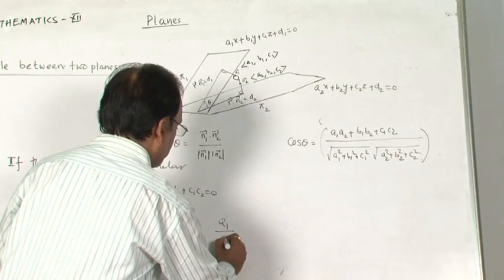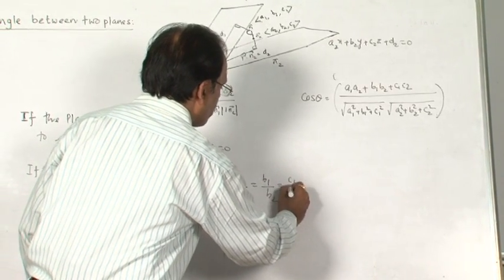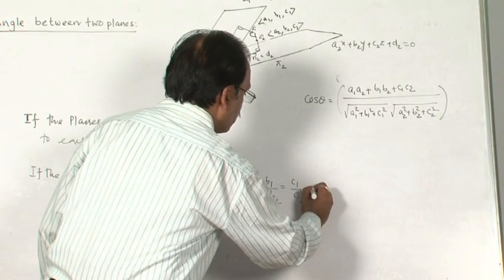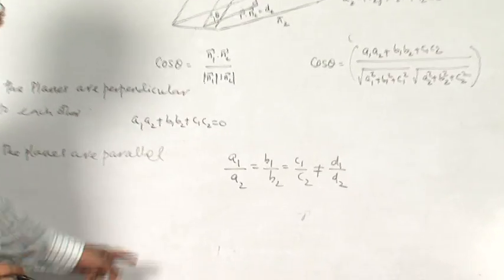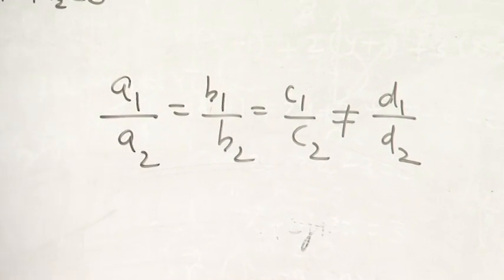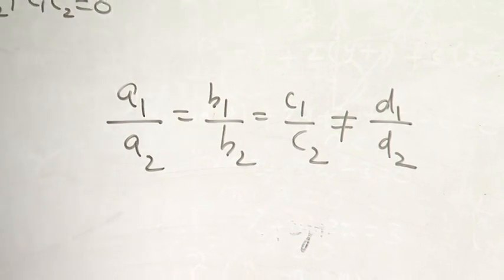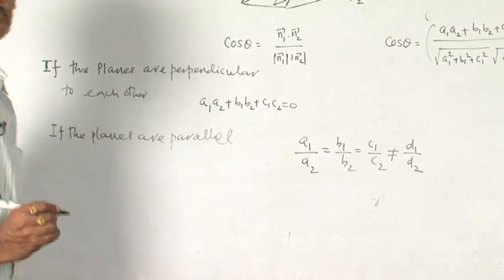In that case, a1/a2 = b1/b2 = c1/c2, but not equal to d1/d2. If the planes are parallel, then from this condition we see that two parallel planes will differ by the constant term. This will be very useful to solve problems.